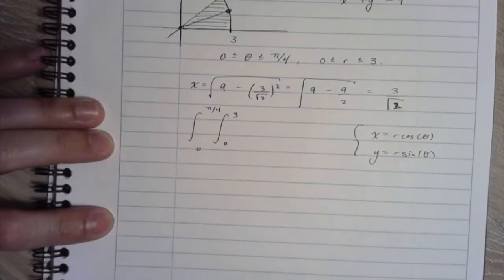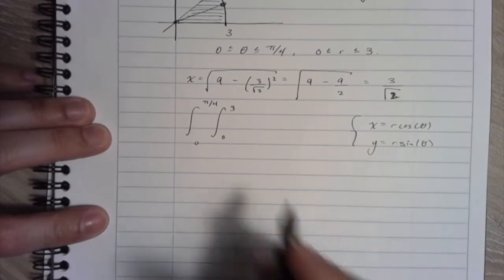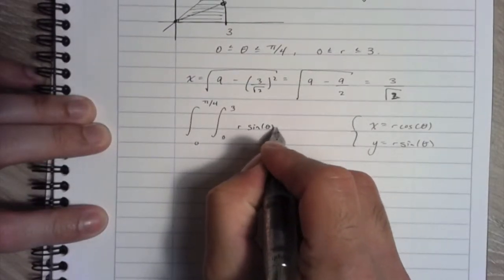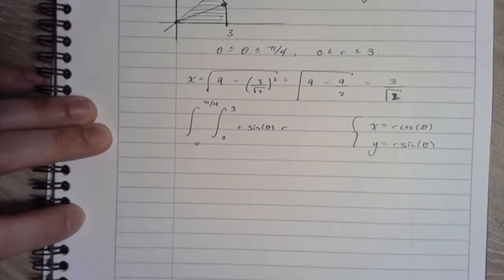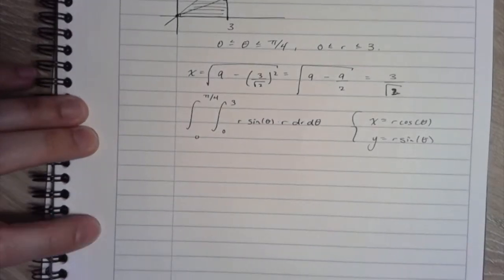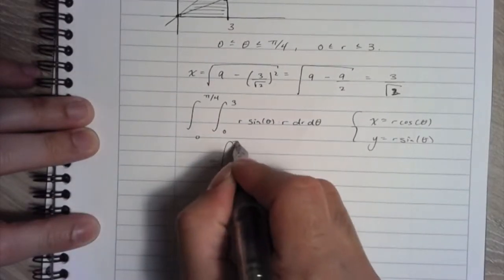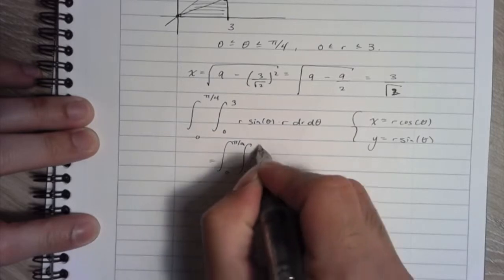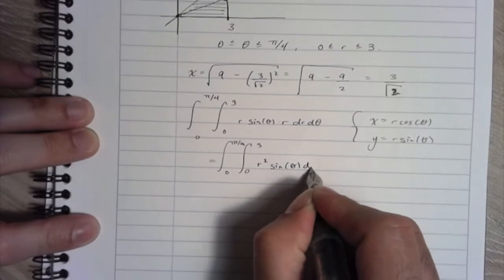So I'm changing y up here. I'm going to replace it with r sine theta. And when doing polar integration, or at least translating, I have to multiply by the r term. And this is going to be dr d theta. Okay, so let's write here, let's just rewrite this integral as r squared sine theta, dr d theta.